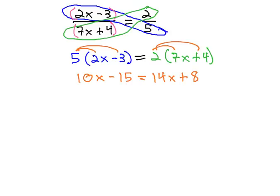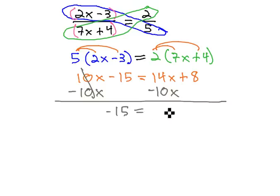As we have the variable on both sides of the equation, we'll move the 10x over by subtracting 10x from both sides. This gives us negative 15 equals 4x plus 8.